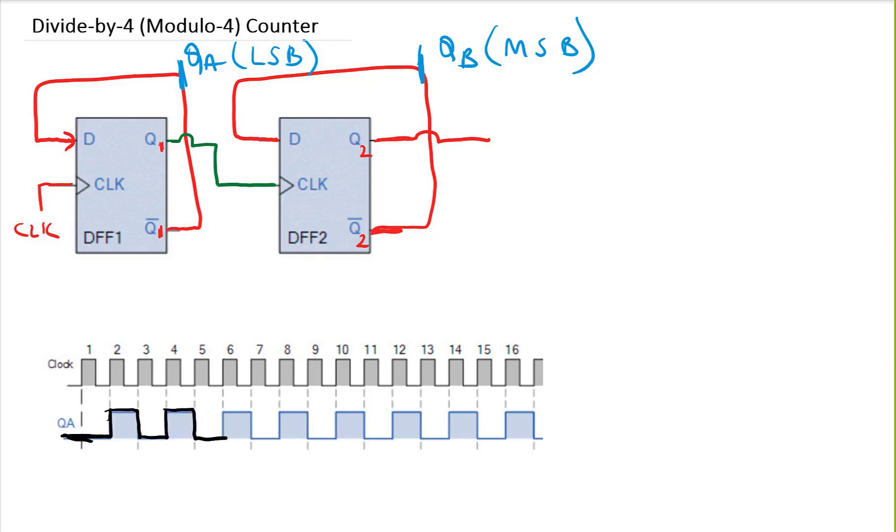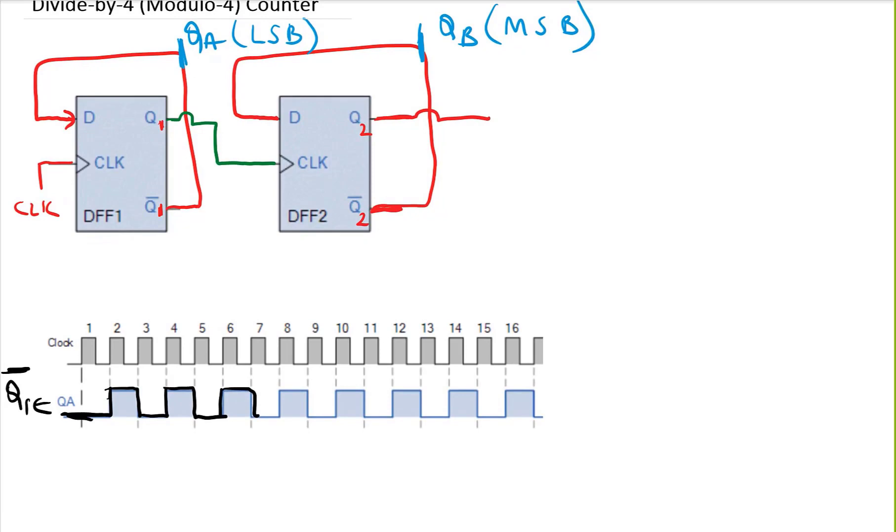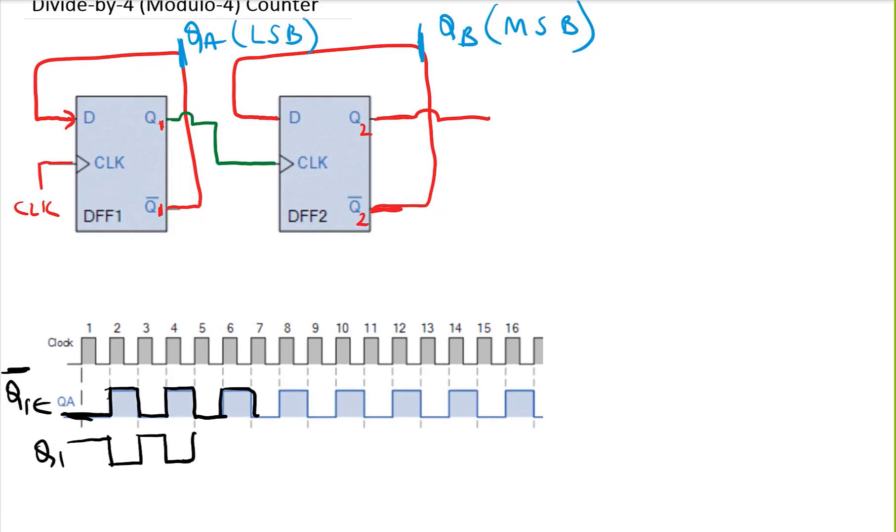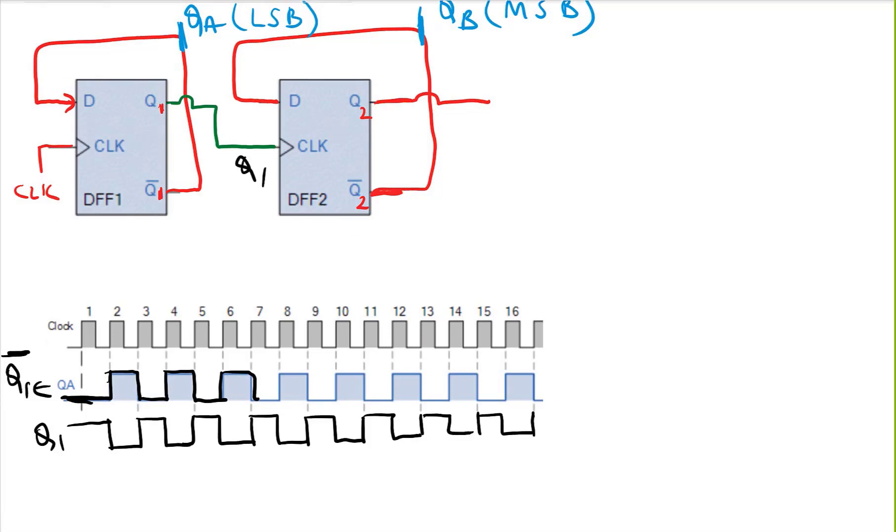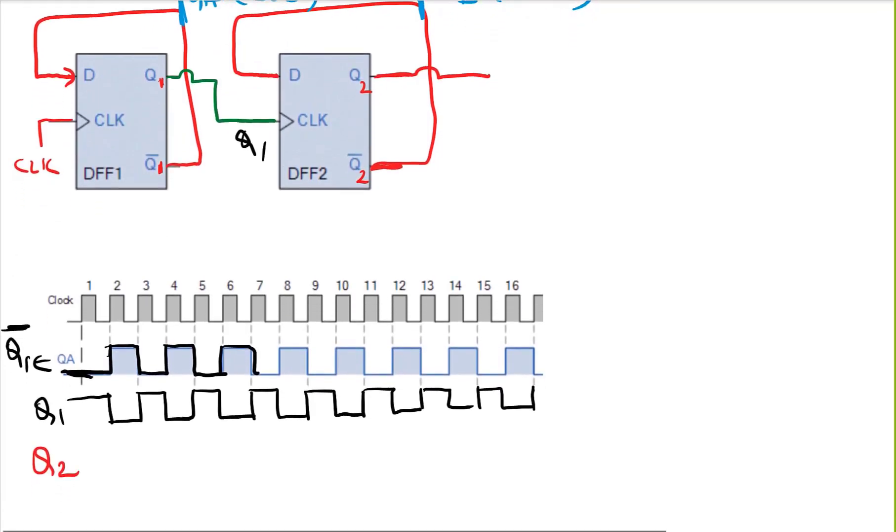We already seen this in the previous design - this is a divided-by-2 output. This QA is coming from Q1-not actually. Let's also draw our Q1. Q1 will be just the inverse of this QA. This Q1 actually is a clock for the second flip-flop. Then let's first find Q2. Q2 is initially 0.